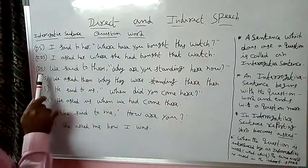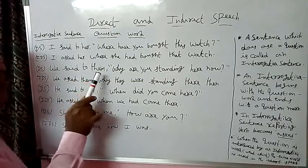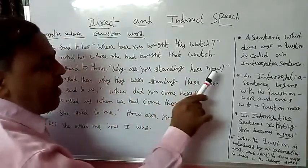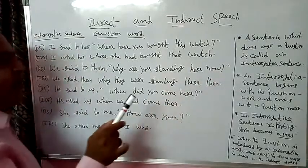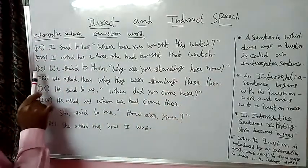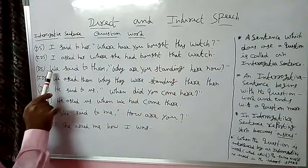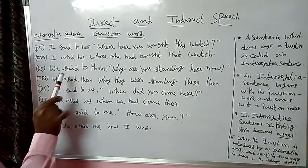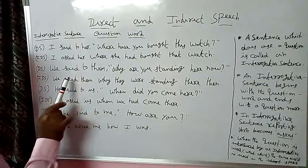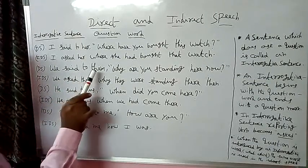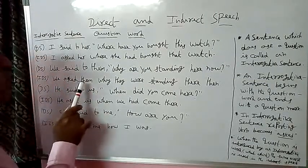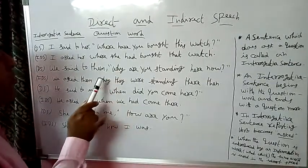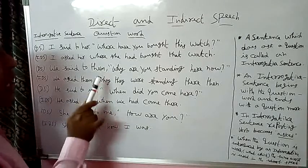Next example: He said to them, 'Why are you standing here now?' Here in direct speech the subject is 'we', and the same subject we must write in indirect speech. The reporting verb 'said to' becomes 'asked'. The object is 'them', and the same object we must write. The question word is 'why', and the same question word is used instead of a comma.